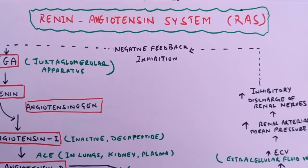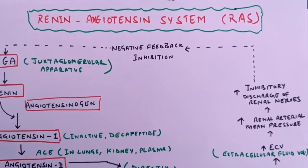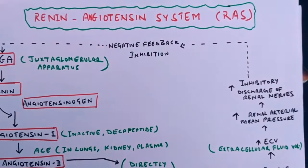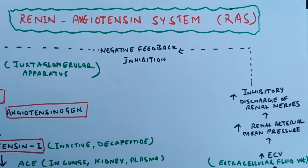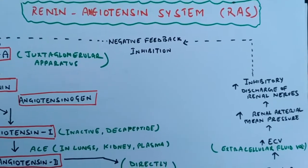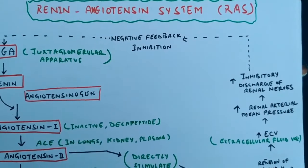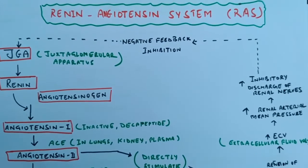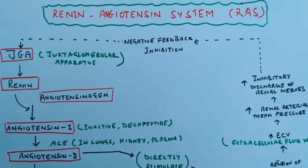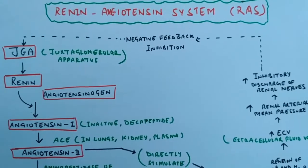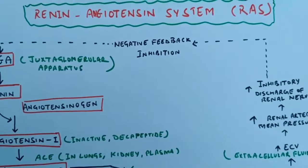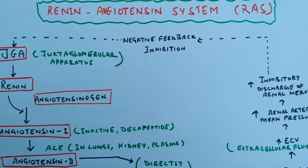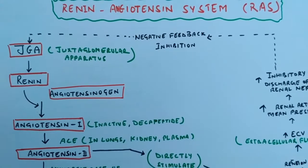Good evening friends. I am back with my new video tutorial. It is related to the Renin-Angiotensin System, in short called the RAS system. It is a very important topic in osmoregulation by the kidney. It is a joint effect of the kidney, liver, and the adrenal gland, so it is an integrated type of system. Its main motive is to control fluid balance and sodium retention in the body.